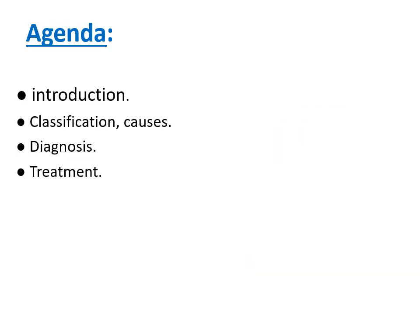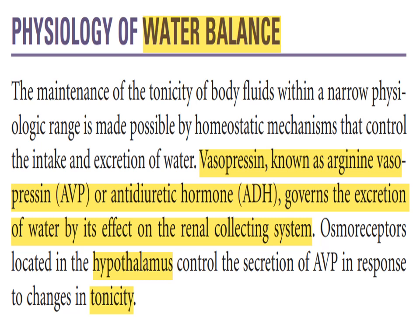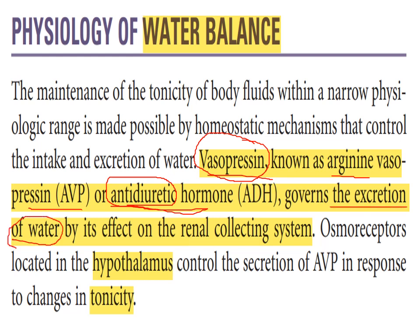Before we talk about diabetes insipidus, we should first discuss an important hormone in our body: vasopressin, known as arginine vasopressin (AVP) or the anti-diuretic hormone (ADH), which controls the excretion of water from our body through its action on the renal collecting system. From its name, it is called anti-diuretic hormone, so it keeps the water in our body.